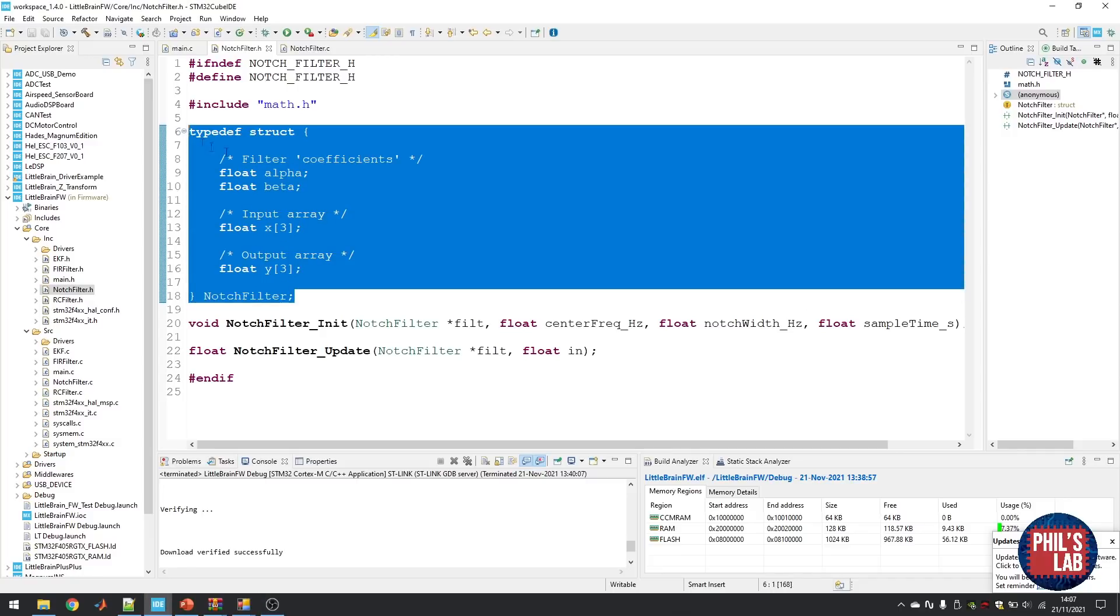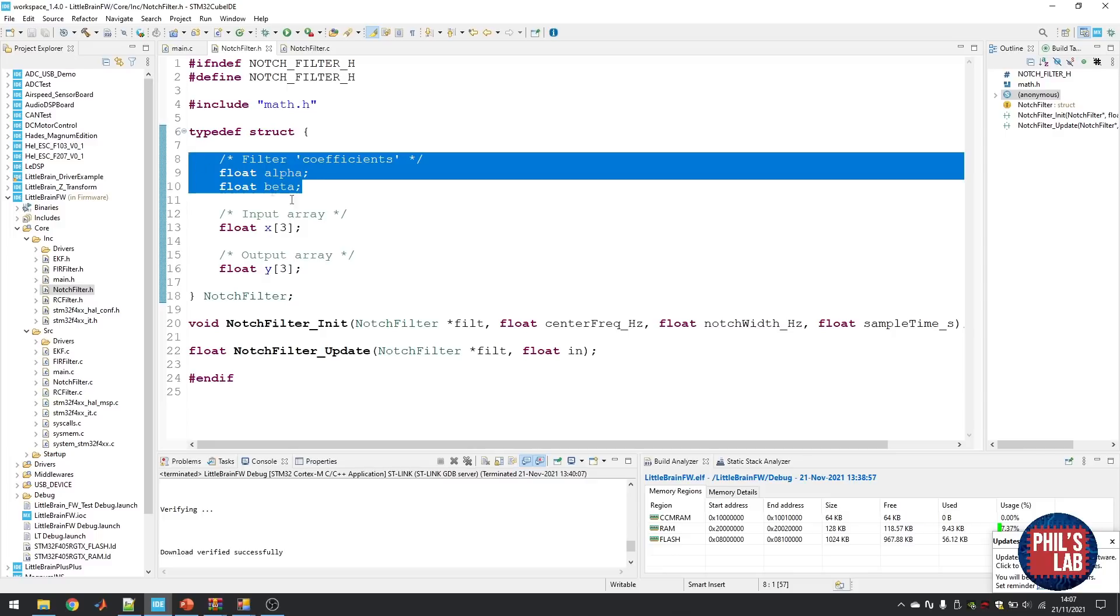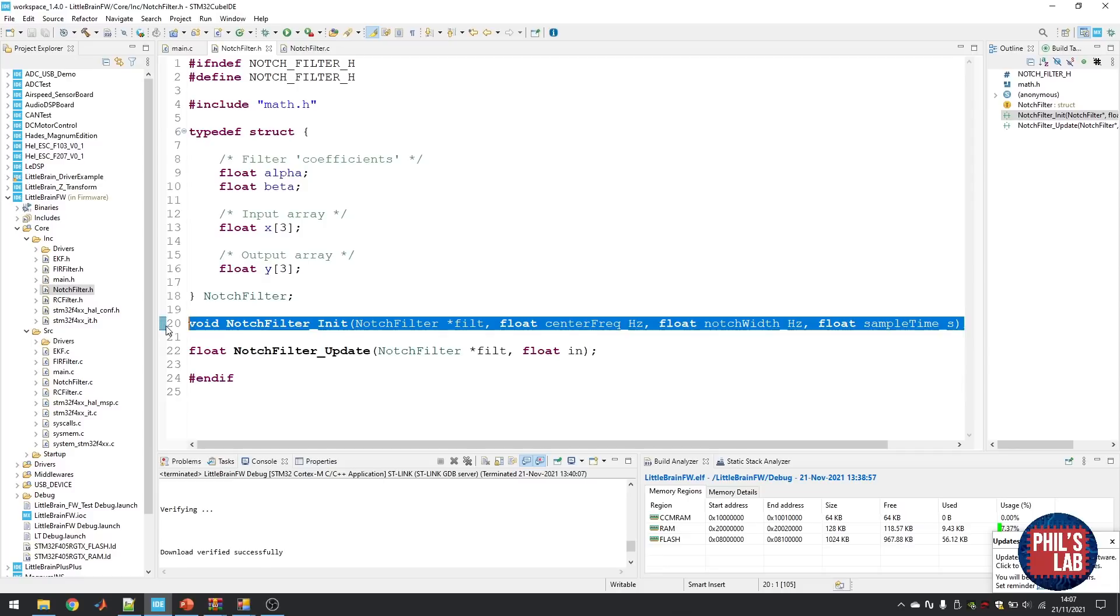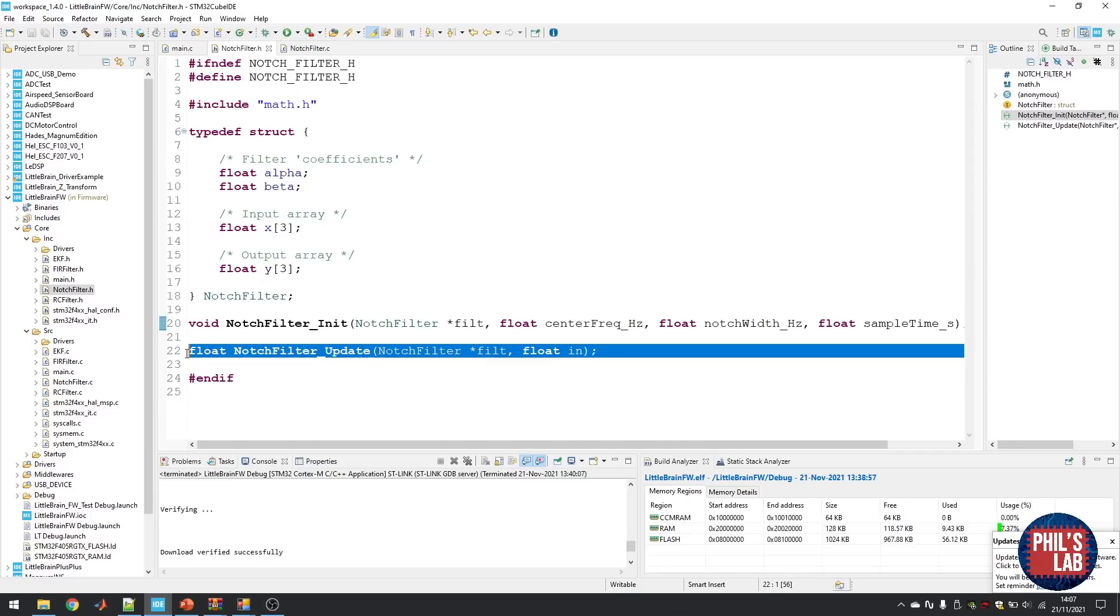I like to have a struct in which I can store my filter coefficients, as well as my input samples and output samples. Then I typically have two functions. One is to initialize the filter, compute the coefficients through the pre-warping, and so forth. And one is an update function that actually computes the new filter output sample.